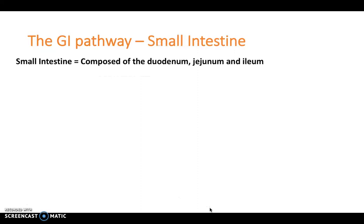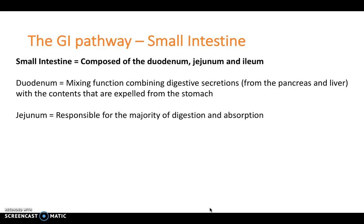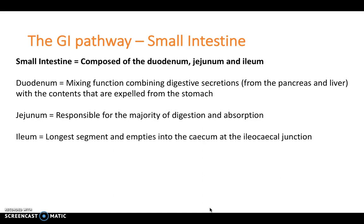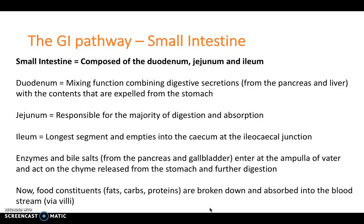The small intestine is composed of the duodenum, jejunum and ileum. The duodenum allows mixing of digestive secretions from the pancreas and liver with contents expelled from the stomach. The jejunum is responsible for the majority of digestion and absorption in the digestive system. The ileum is the longest segment and empties into the cecum at the ileocecal junction. Enzymes and bile salts from the pancreas and gallbladder enter at the ampulla of Vater, acting on chyme for further digestion. Fats, carbohydrates and proteins are broken down and absorbed via the villi, particularly present in the jejunum.